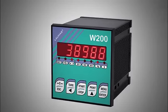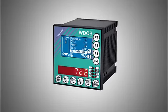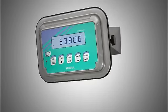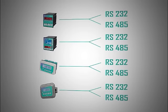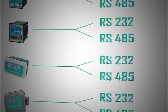Weight indicators W-200, W-DOS, W-DESC and W-ENOX, which standard are fitted with two serial outputs, one RS-232 and one RS-485.